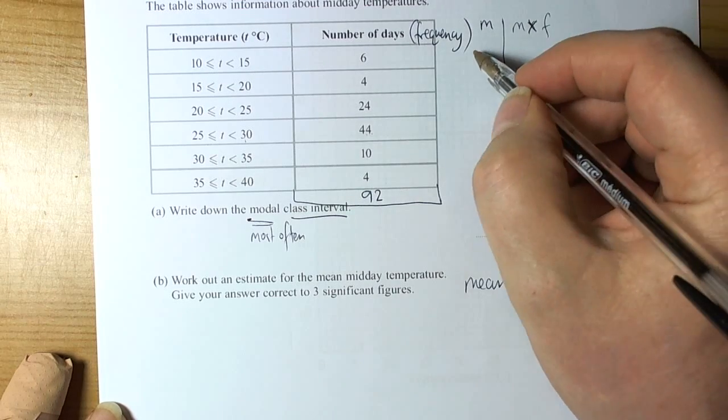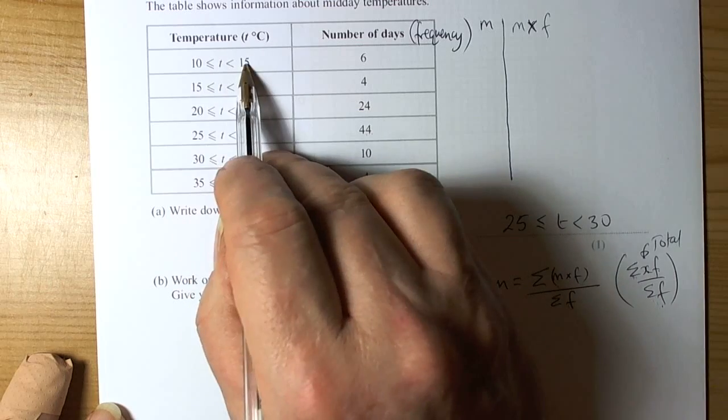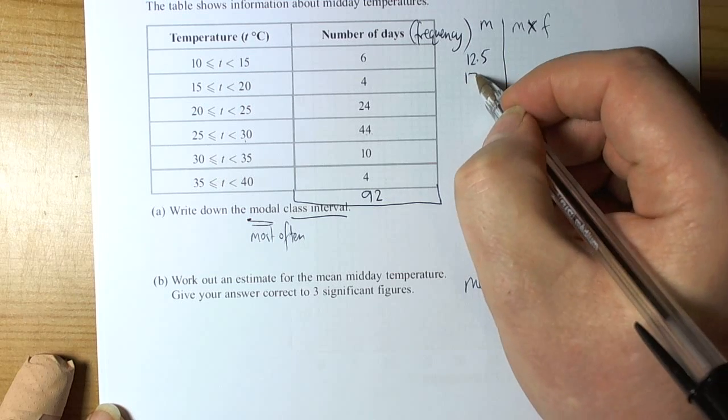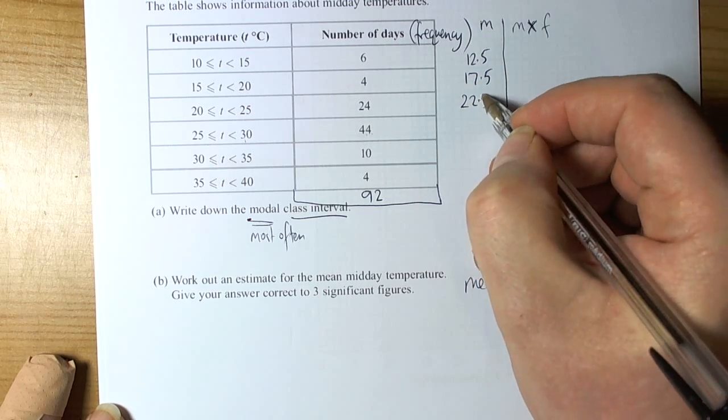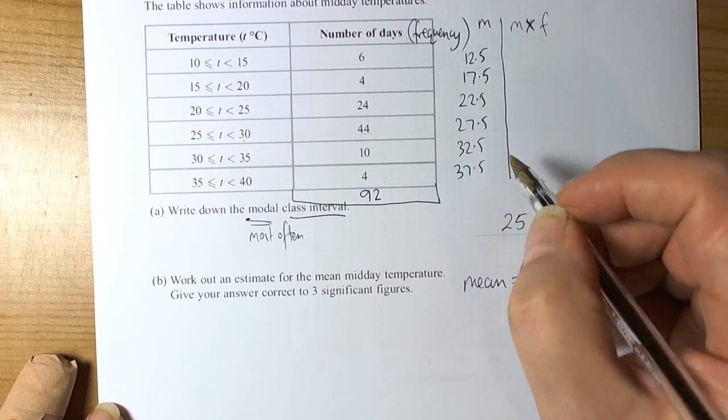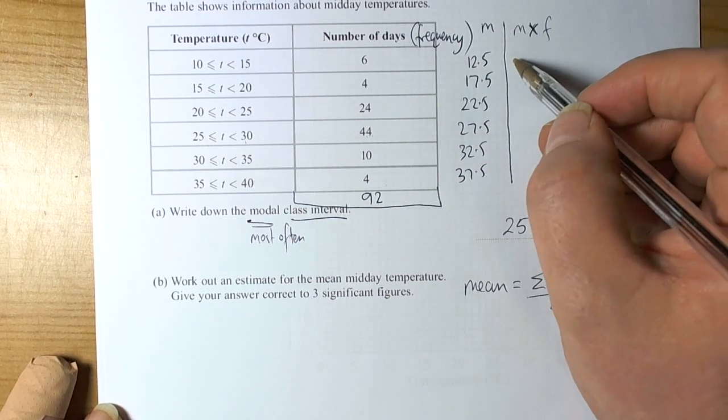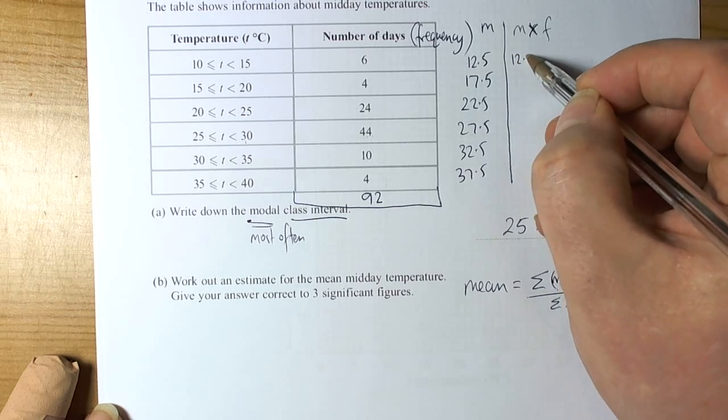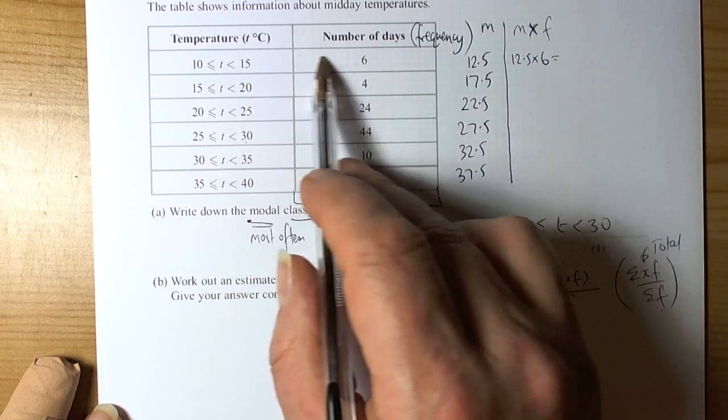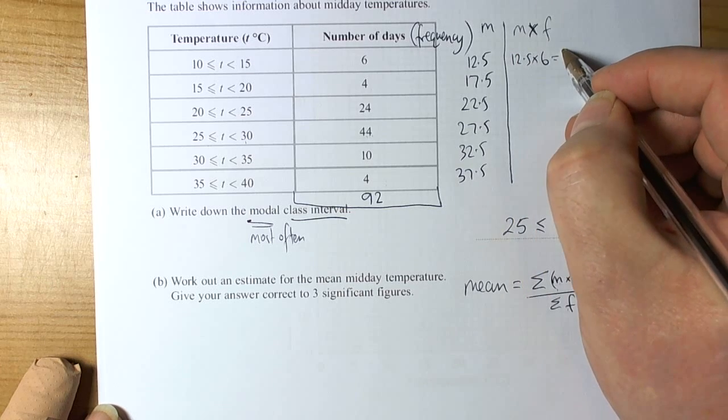So we've got to work out the midpoints. The work we've said doing that is you add the two numbers up and then halve it at the end of each interval. Some of these are fairly logical. You're going halfway with 5s. So 12 and a half, 17 and a half, 22 and a half, 27 and a half, 32 and a half, and 37 and a half. So those are all the middle values between the intervals. And then we have to do the midpoint times the frequencies. So we're going to be doing 12 and a half times 6. So 12 and a half times 6 is 72 plus 3, 75.